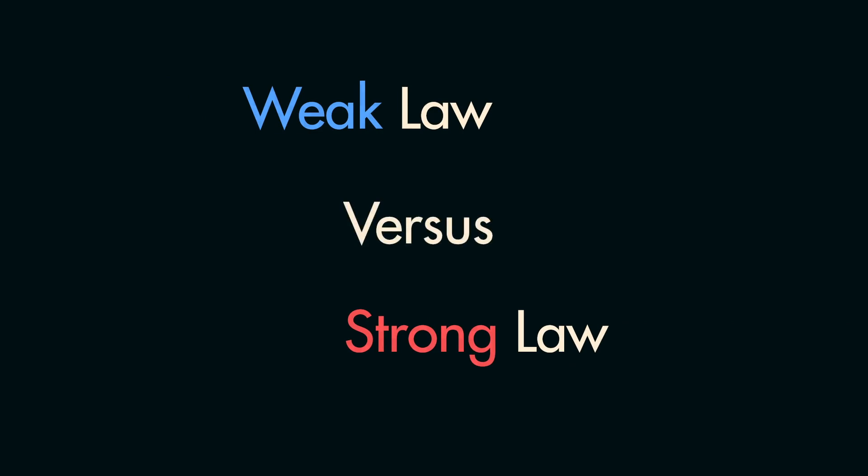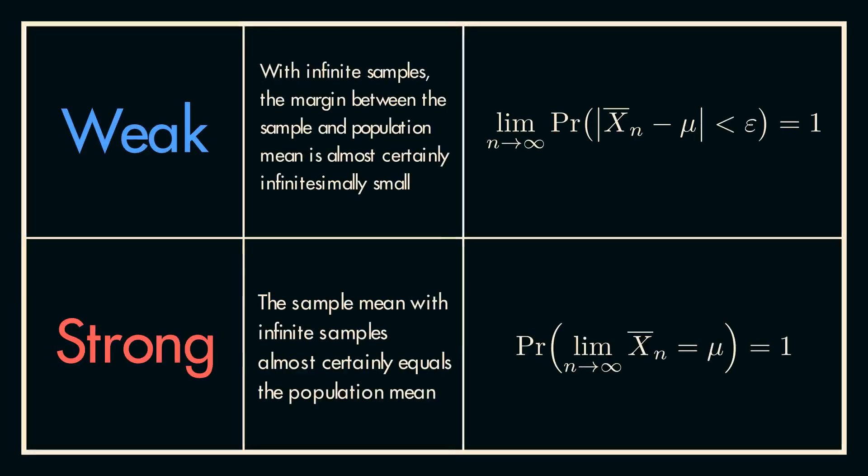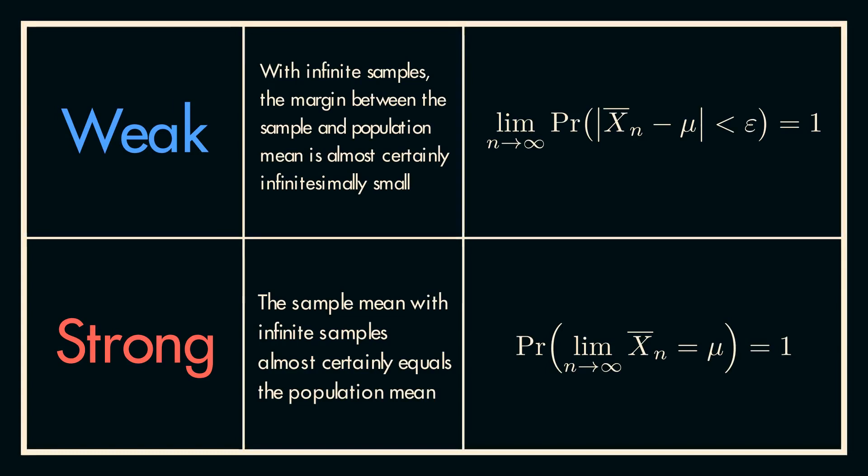As you can see, we are making a much stronger statement on the convergence of the sample mean compared to the weak law. Rather than saying it is extremely likely that the difference between the sample mean and the population mean is infinitesimally small, with an infinite number of samples, we are saying that the sample mean with an infinite number of samples will certainly equal the population mean.